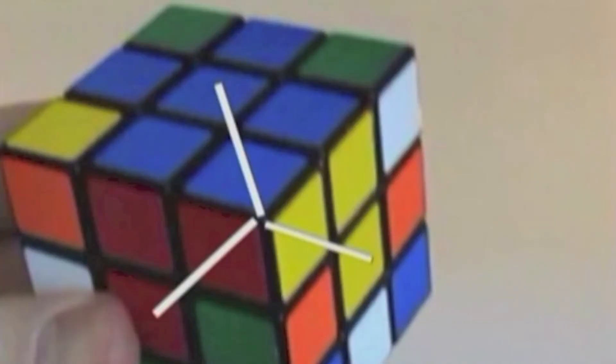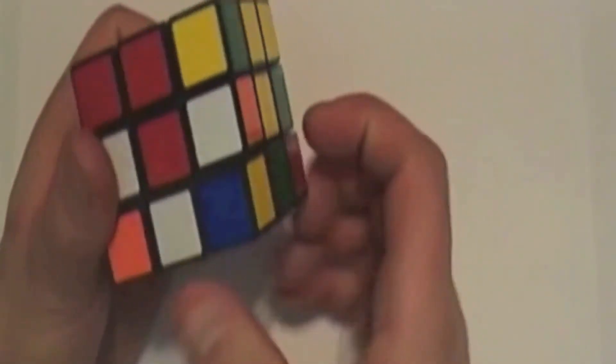Now we're going to follow a pattern. It goes right column down, bottom row left, right column up, and then bottom row right. Once you do this pattern, you want to check and see if those corner colors line up with the same color center square. If they do, then you're done. But many times, you're going to have to do that pattern multiple times and check every time to see if these corner colors line up with the same color centers. Let's watch it in action.